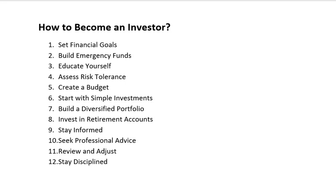Here is a step-by-step guide on how to become an investor. First step is to set financial goals: specify what your financial activities are aiming at, such as preparing for retirement, buying a house, or other similar objectives. The time frame for achieving each goal affects your investment strategy. Second is to build an emergency fund: a liquid, readily accessible account that covers unplanned expenditures should hold at least three to six months' worth of living expenses. Third is to educate yourself: familiarize yourself with different ways of investing, how much risk is involved, and various investment strategies. Read educational materials on personal finance and investment.